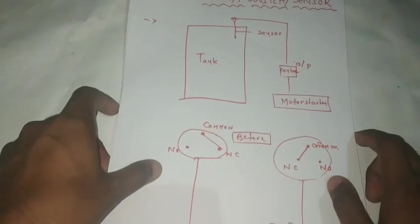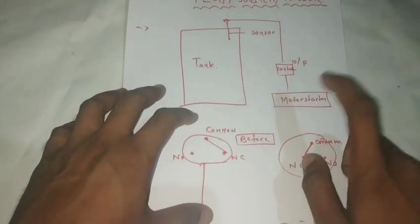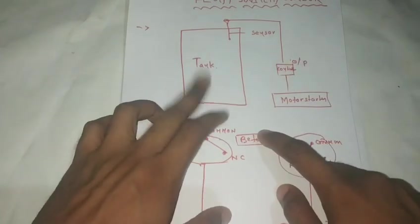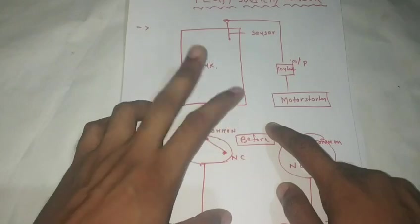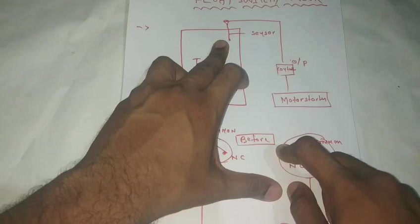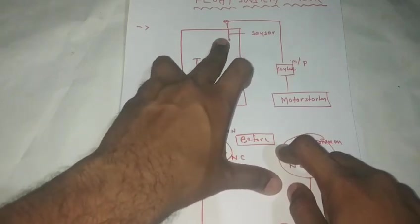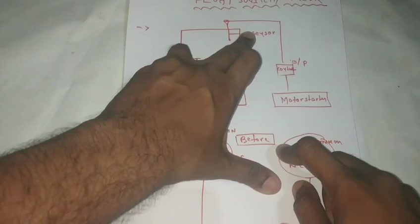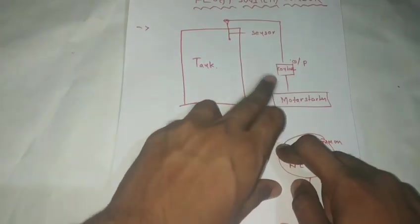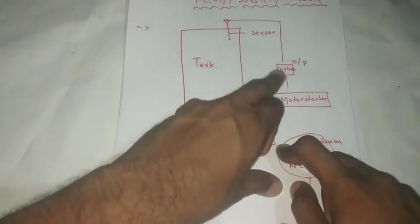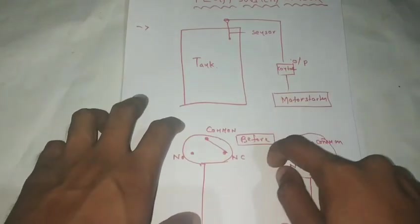Generally, we control a motor starter. We control a motor in a tank level. We control a motor through this sensor. When we are at the source of water level, we control the motor. How much does this water level fill? We start to run a motor through a starter signal.